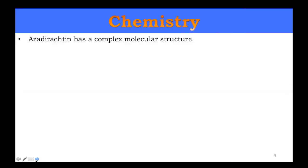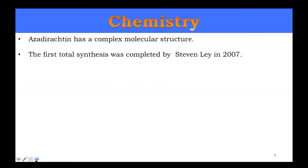Regarding its chemistry, azadirachtin is a compound known as an intense insecticide and repellent. It is biodegradable, which is an important property to note.